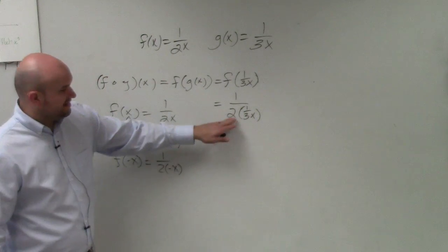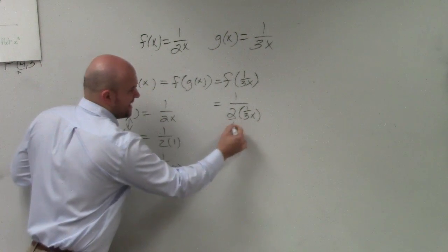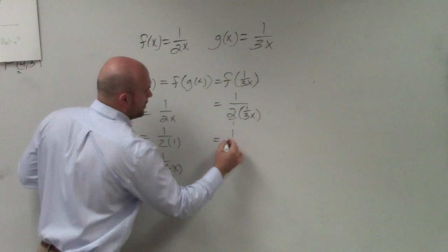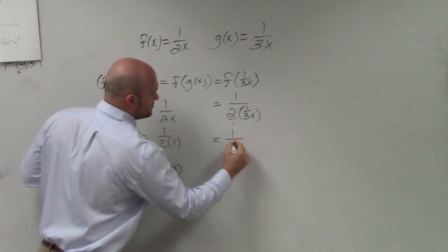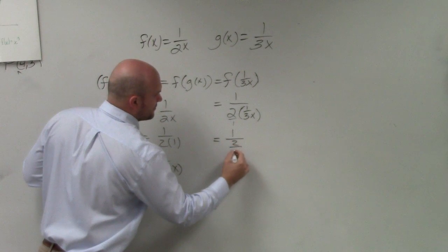When simplified, that's a whole number. You can rewrite that as a fraction. Therefore, I have 1 over 2 divided by 3x.